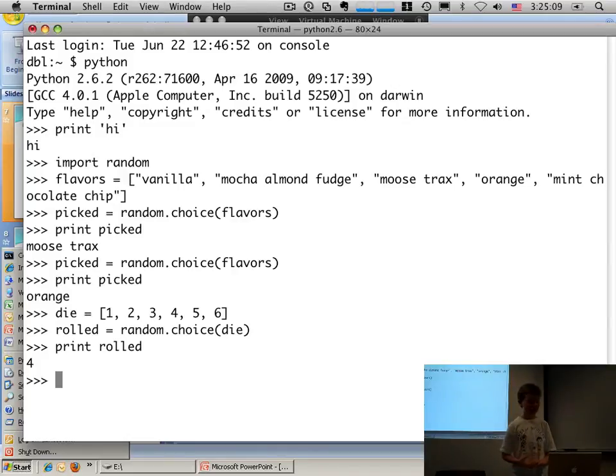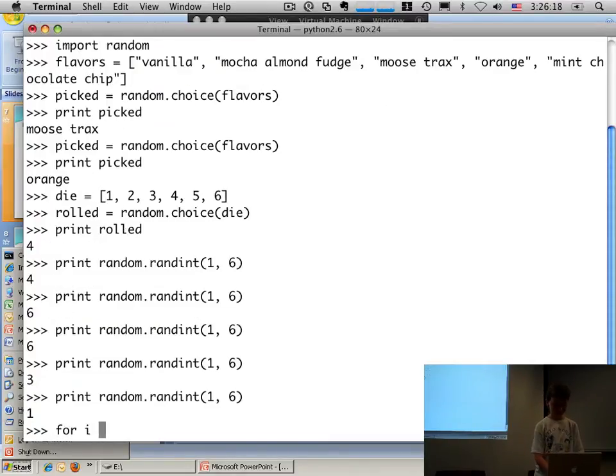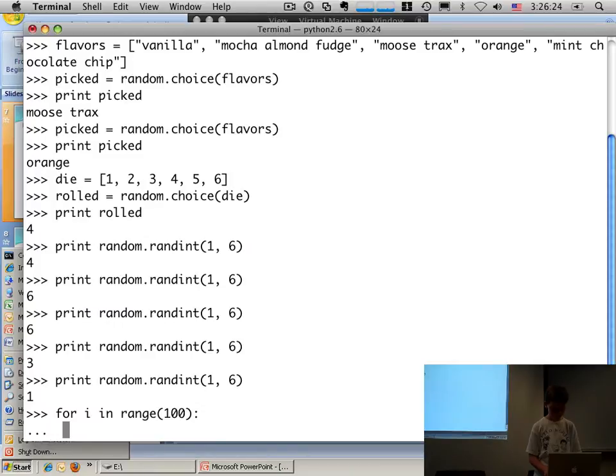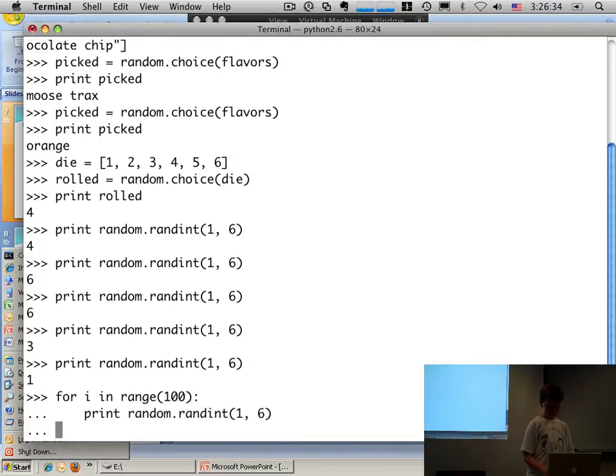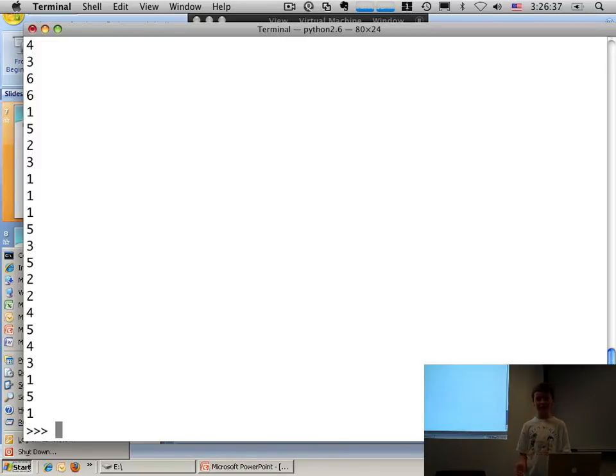Now do you have another way that you can do that? Yeah, another way to do this is... I know I'm putting you on the spot. Yeah, I think you can do it. For i in range 100, print random.randint 1, 6. Well, that was quick. It's slower on my computer.